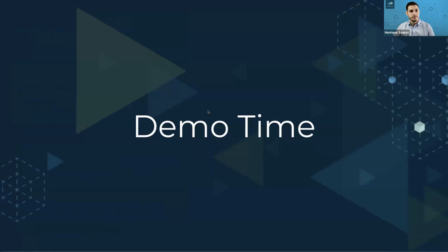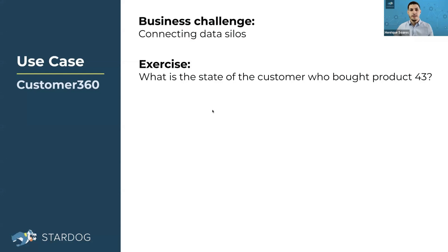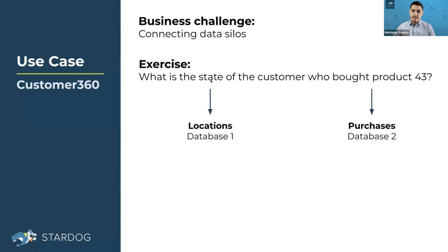Now it's demo time. For our demo, we have a use case for Customer 360 with a very common business challenge: connecting data silos. As an exercise, we have to understand what is the state of the customer who bought Product 43. The problem with data silos is that the state information is in a first database for locations, and the Product 43 purchase is in a second database called Purchases — and these databases are not connected.